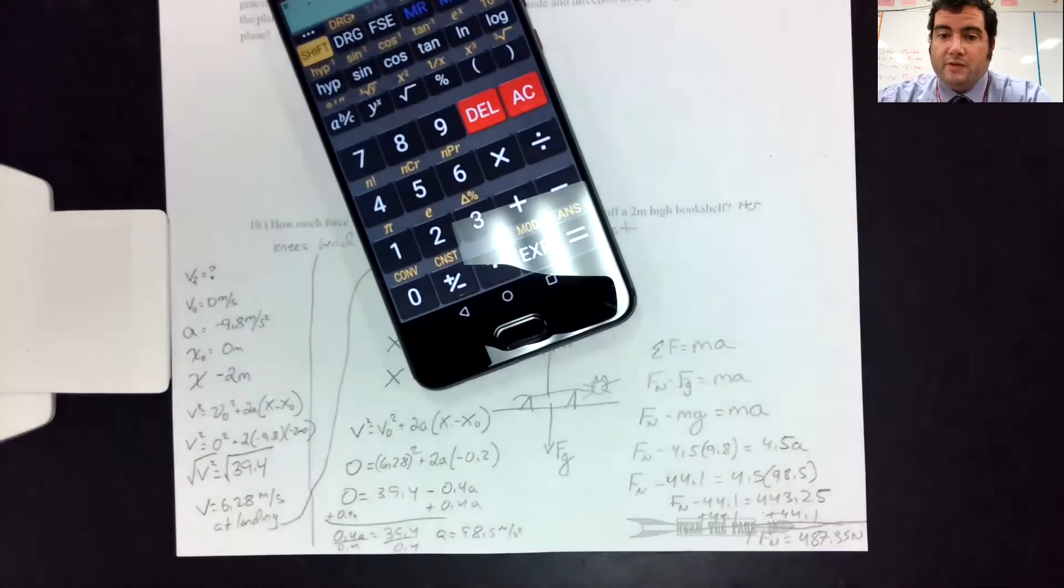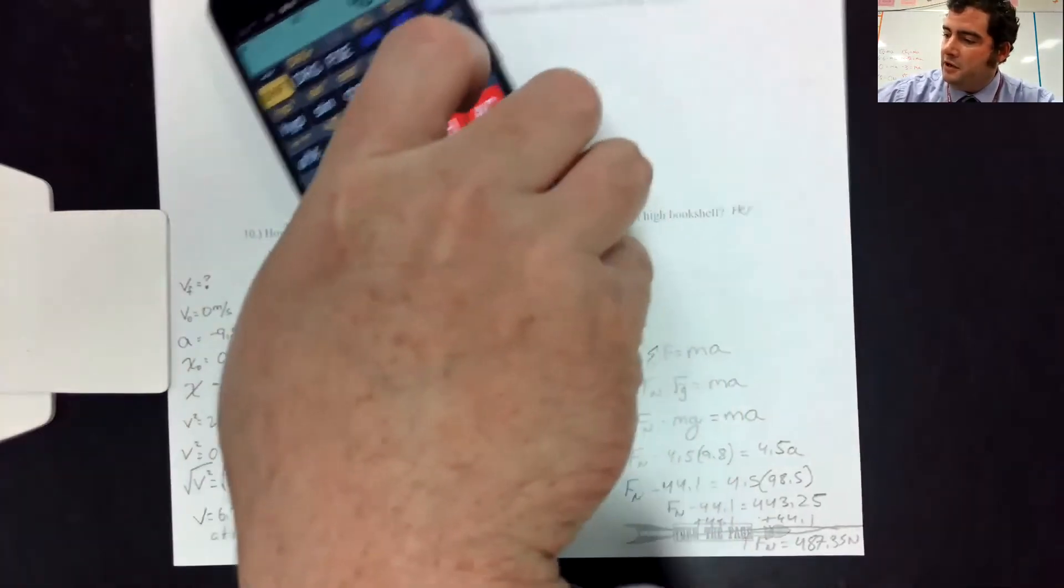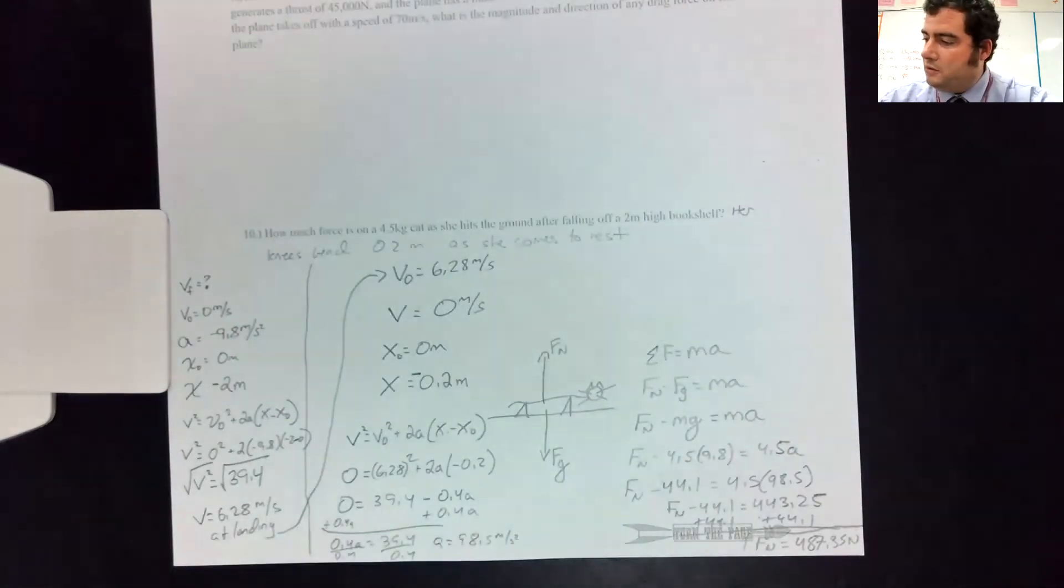All right. So that's how you solve problem 10 on the test review. Sorry it was so hard. I hope you learned something about solving this kind of problem. It basically was two problems. A motion problem like a unit one thing. And then this is what we'd expect to do in a normal problem on the test.